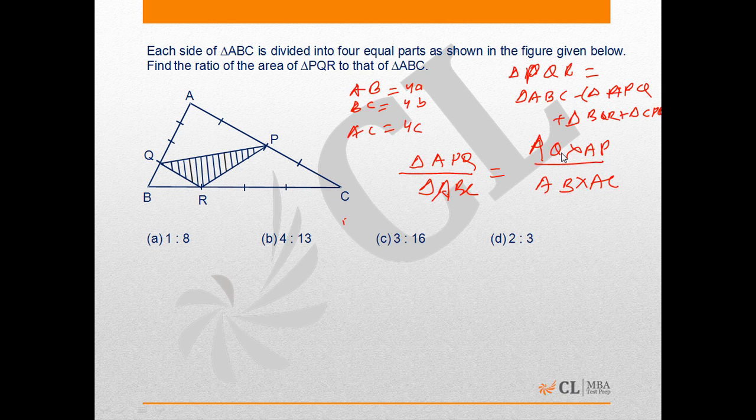The area formula is given by 1/2 times the product of the given sides, in that case AB into AC into sine A. So this ratio will be equal to the sides.